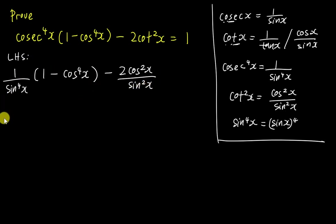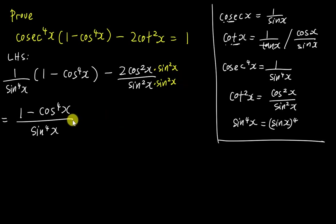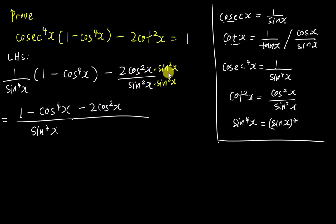Then I expand the bracket as usual, so the whole thing becomes 1 minus cos power 4 x, all over sine power 4 x. Now I want to make them have the same denominator so I can join them into one fraction. I'll multiply by sine squared x on both numerator and denominator. So on the top I should have something like 1 minus 2 cos squared x. I can also change sine squared x into 1 minus cos squared x.